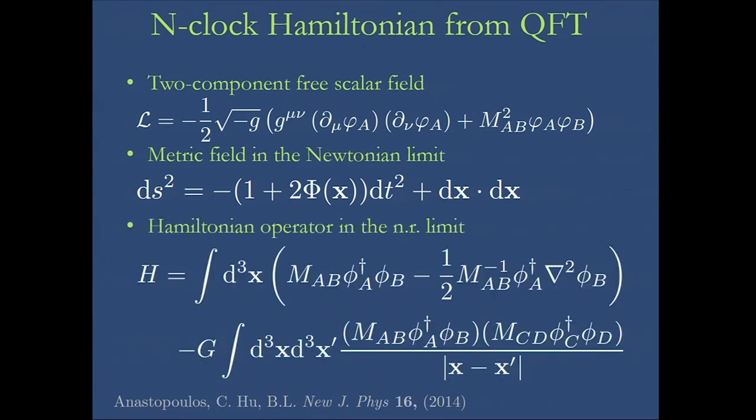We take the non-relativistic limit, and we end up with this Hamiltonian that looks very bad, but which is very useful to treat the Hamiltonian of the n clocks in a very systematic way. If you want to obtain the Hamiltonian that describes interaction of two clocks, you just take this Hamiltonian, and you project into the two-particle subspace, and you obtain the Hamiltonian that I showed you before. If you want to do it for n clocks, you just take the n particle subspace of this field Hamiltonian.